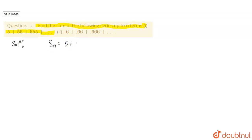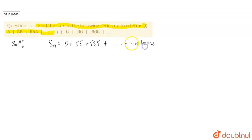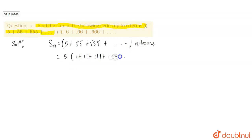Note this series: S is equal to 5 plus 55 plus 555 up till N terms. Here we can take 5 out as a common factor, giving us 5 into 1 plus 11 plus 111 up till N terms.